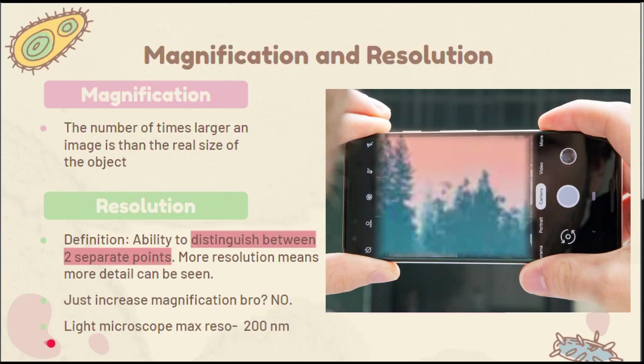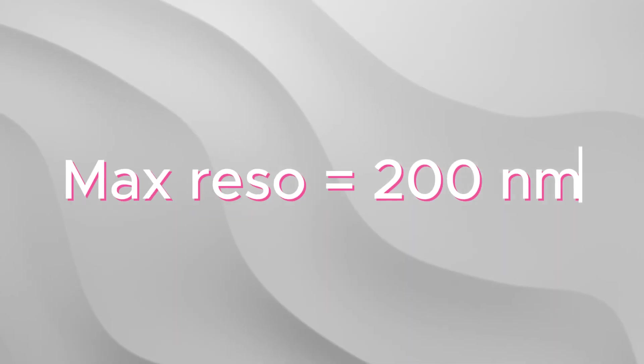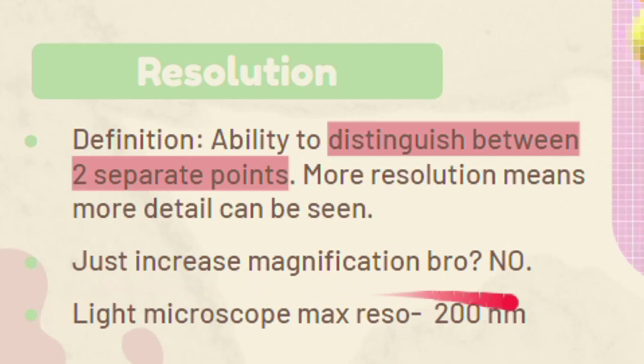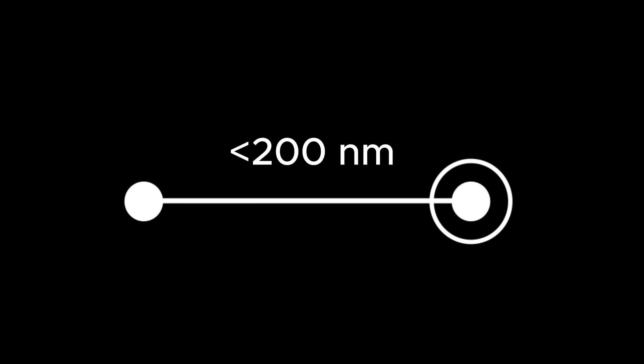Just like the cheap Android phones we use, light microscopes have a max resolution of 200 nanometers, which is the problem we actually want to tackle. By 200 nanometers, we mean that if two objects or points are closer than 200 nanometers, we wouldn't be able to tell them apart.